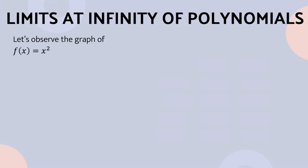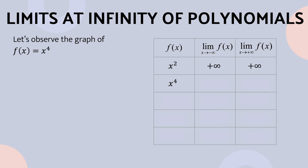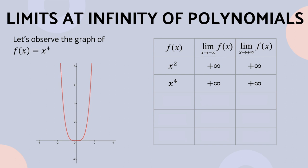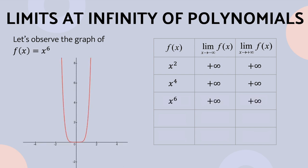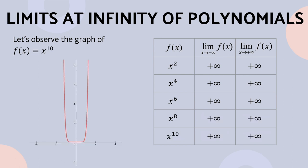Let us observe the graph of f(x) = x². As you can see, the left-hand and the right-hand limits approach positive infinity. For the graph of f(x) = x⁴, the left-hand limit approaches positive infinity as well as the right-hand limit. The same behavior is shown for the graphs of x⁶, x⁸, and x¹⁰.